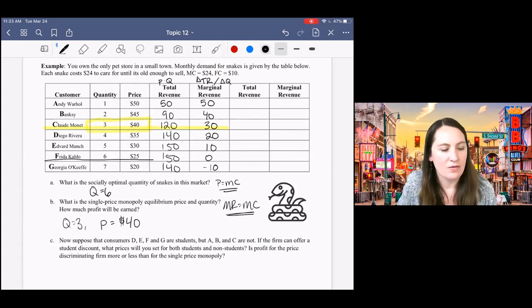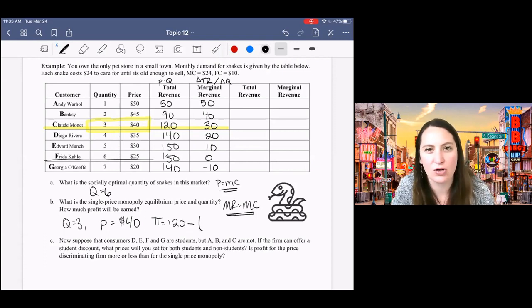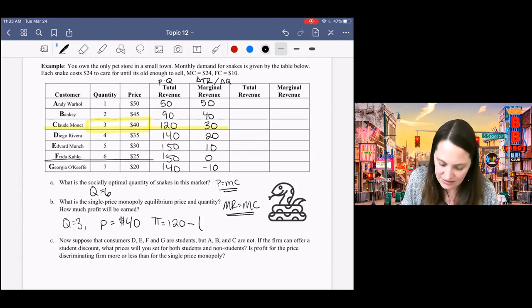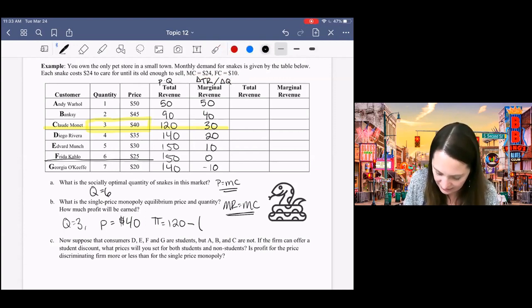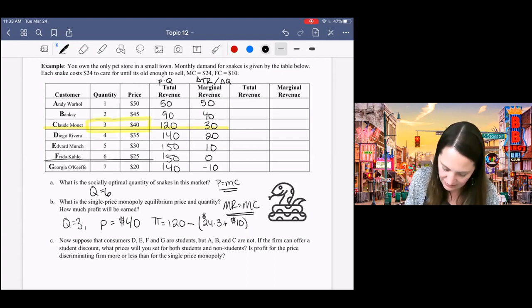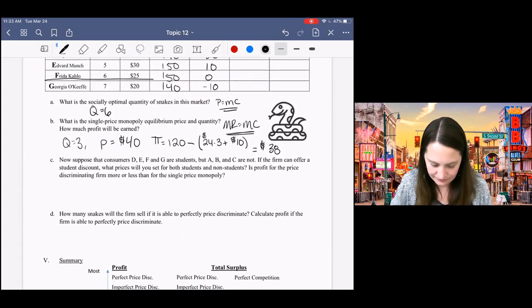All right. Now I want to know also how much profit we're going to earn. That's going to be total revenue minus total cost. Now I have to calculate total cost. It costs $24 to raise each snake. And then we also have a fixed cost of $10. So altogether, that's going to be $24 times three snakes plus my $10 fixed cost. So profit will equal $38 for the single price monopoly.